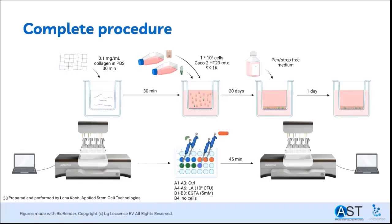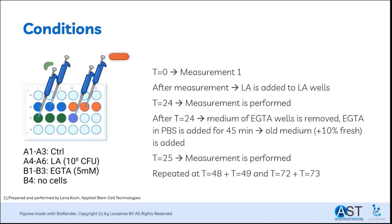This is the total setup of the experiment. Caco-2 cells and HT29-MTX cells are cultured on a collagen-coated transwell for three weeks. One day before barrier interference, the PenStrep medium is removed and fresh PenStrep-free medium is added. Then, the cells are treated with control medium, LA-containing medium, or EGTA, and impedance measurements are performed. A baseline measurement was performed at T0. LA was added to the LA wells directly after the T0 measurement. After 24 hours, measurements were performed, after which the EGTA wells received 1 mM EGTA in PBS for 45 minutes. After incubation, PBS was removed and old medium was added, and a new measurement was performed. This was repeated for two more days.